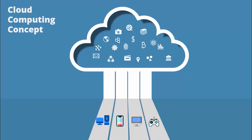In today's tutorial I'm going to show you how to create a slide for a cloud computing concept. I have created a cloud with some random icons inside it, like bitcoin, dollars, fingerprints, emails, and books — different kinds of knowledge a cloud can possess. I've added devices like mobile devices, gaming devices, and laptops. When you click, the information transmits via a line to the devices, starting with a pulse effect and then transferring from the cloud to the devices.